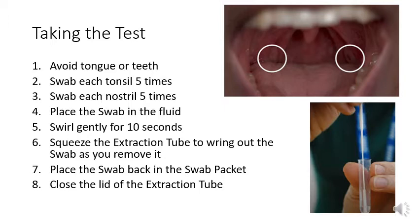Then place the swab into the fluid in the extraction tube. You need to gently swirl it for about 10 seconds, aiming to get as much of the mucus off the swab and into the fluid.